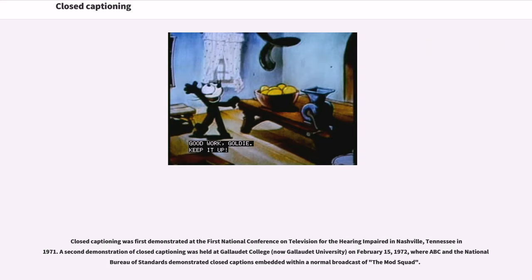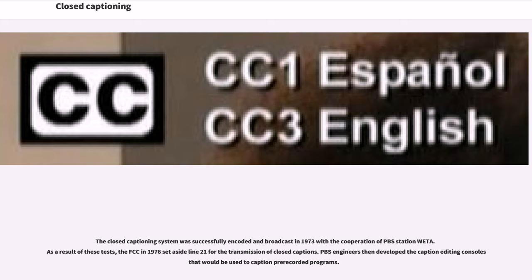Regular open-caption broadcasts began on PBS as The French Chef in 1972. WGBH began open-captioning of the programs Zoom, ABC World News Tonight, and Once Upon a Classic shortly thereafter. Closed captioning was first demonstrated at the first national conference on television for the hearing-impaired in Nashville, Tennessee in 1971. A second demonstration was held at Gallaudet College on February 15, 1972, where ABC and the National Bureau of Standards demonstrated closed captions embedded within a normal broadcast of The Mod Squad.